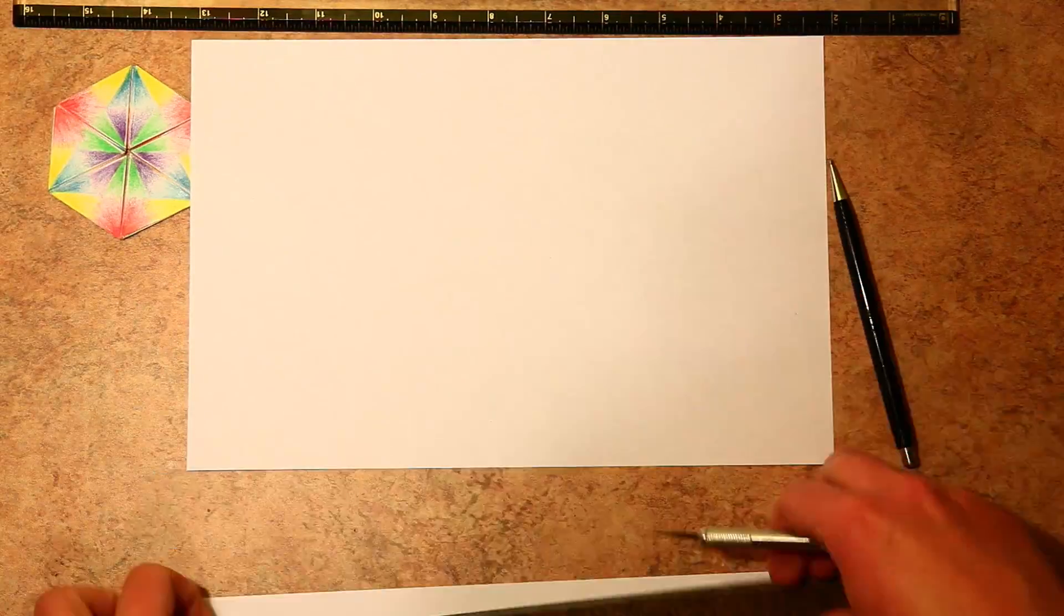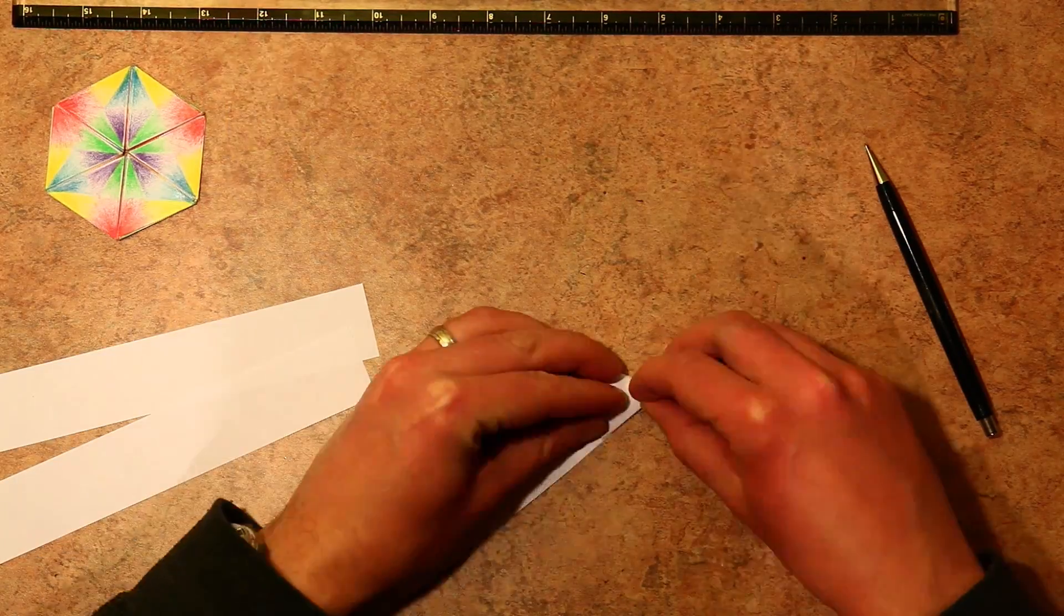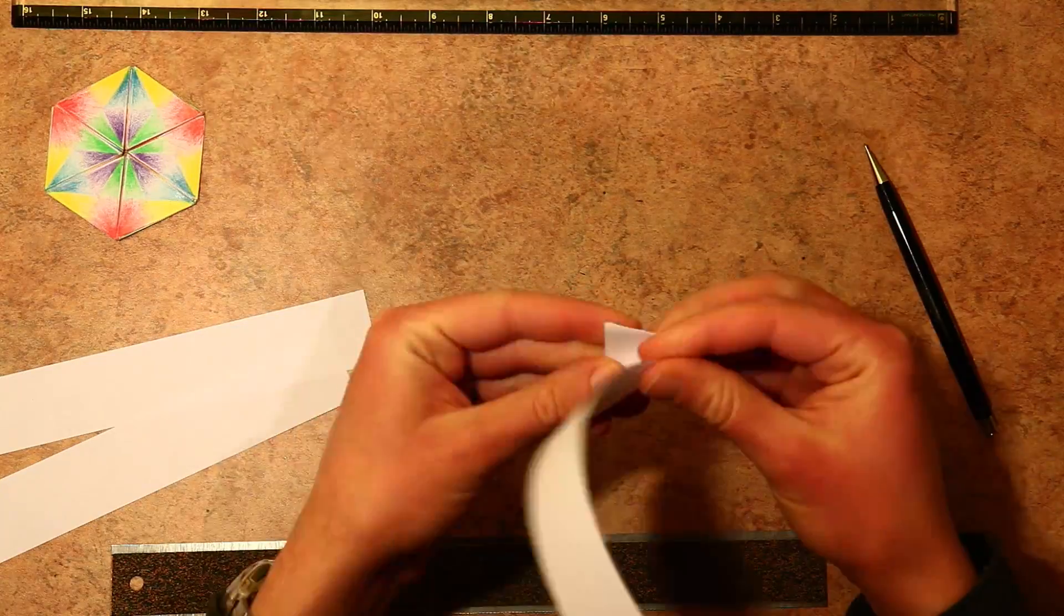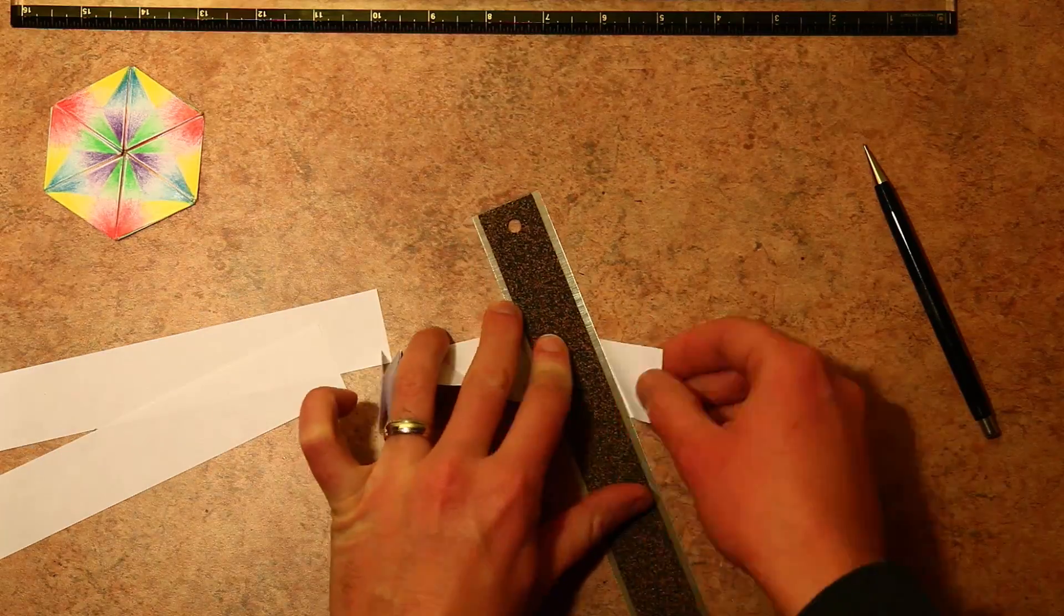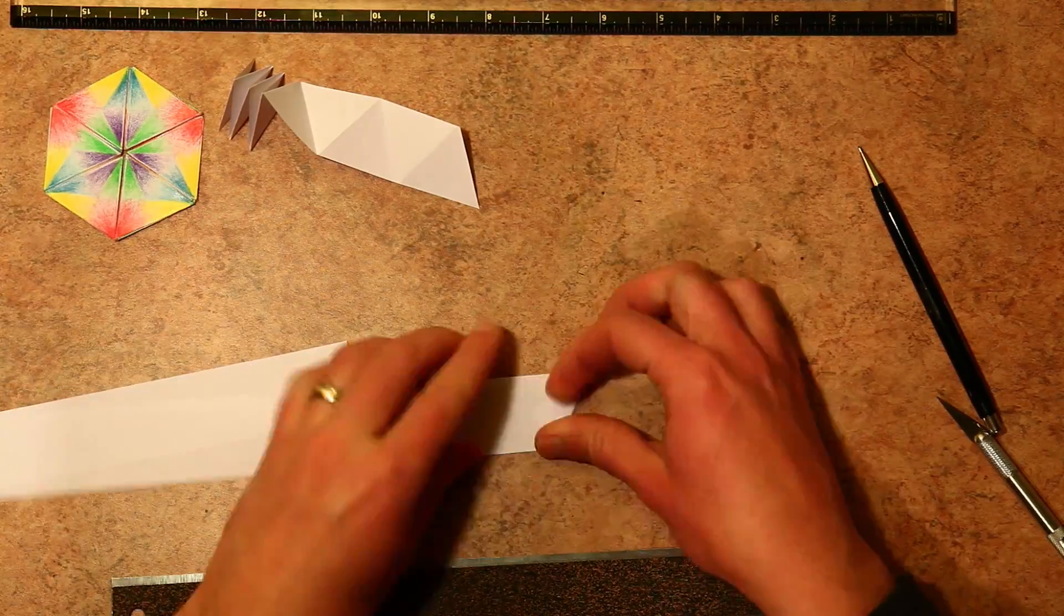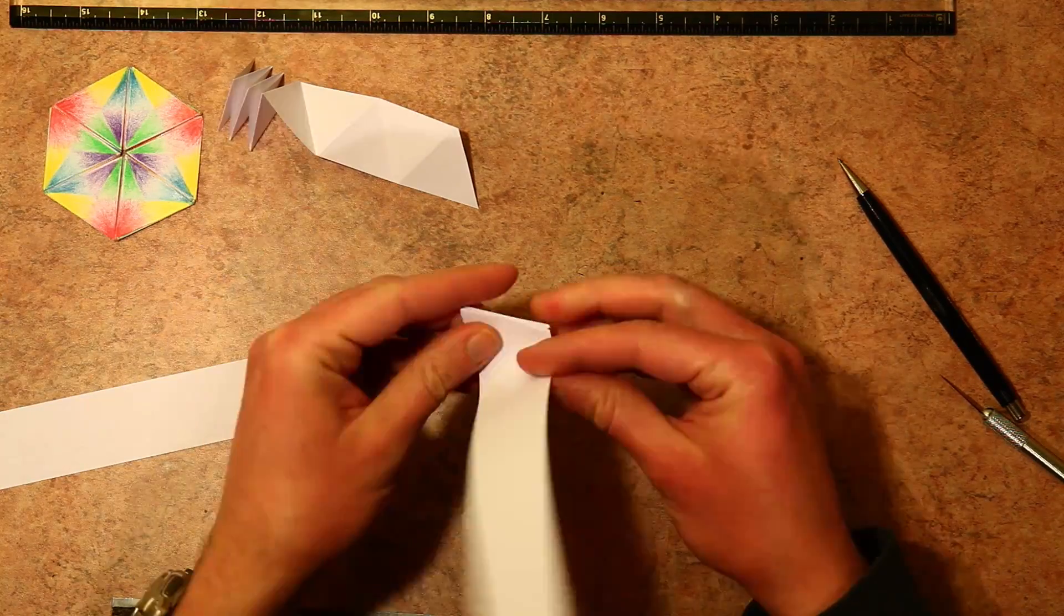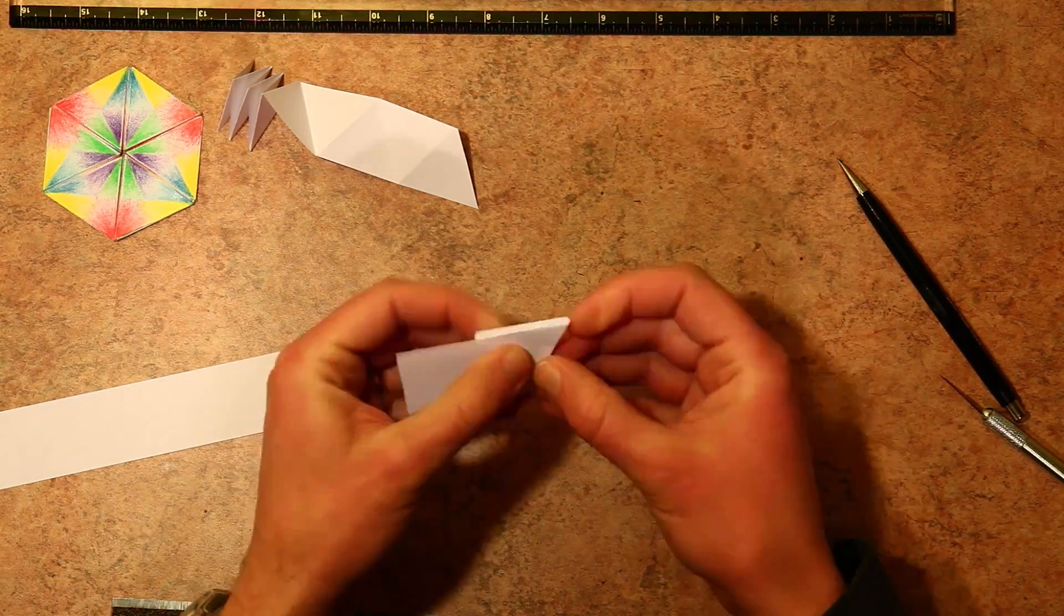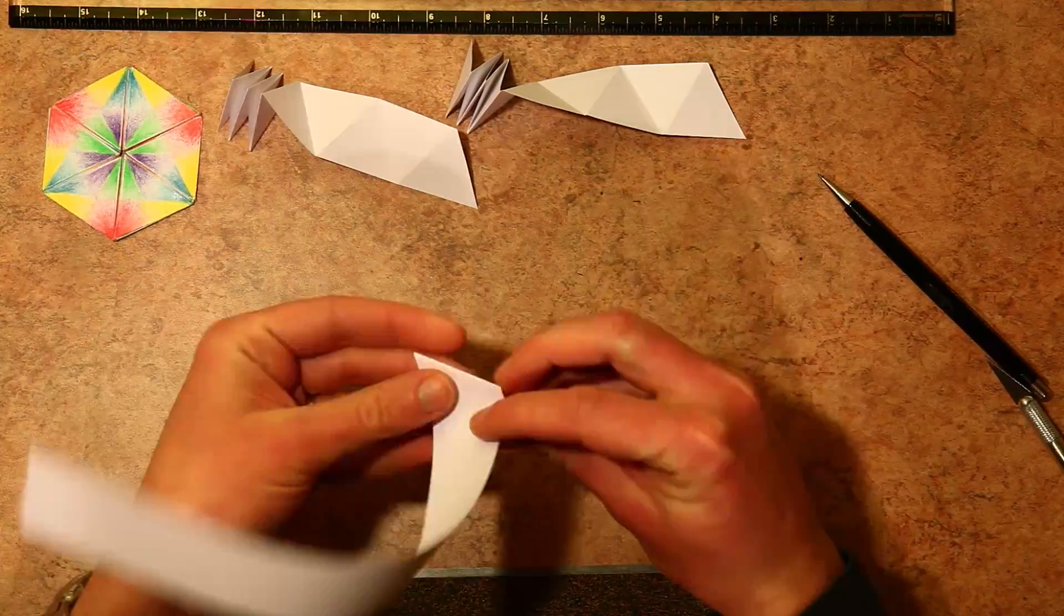Now we'll move on to the big one, the dodecahexaflexagon. The first thing you need to do is get enough paper. We'll need 36 triangles for this one. So I made a note before that I could fit about 12 triangles on a strip of paper, so we'll need three strips for this one. And we'll just fold those up and join them together.